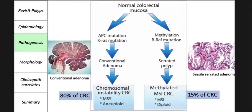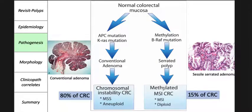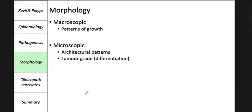Summarizing the two pathways: a normal colorectal mucosa with APC mutation leads to a conventional adenoma, while a BRAF mutation leads to a serrated polyp — both are adenomas but with different morphology. Conventional adenomas may show tubular, villous, or tubulovillous patterns, eventually leading to chromosomally unstable, microsatellite stable, aneuploid colorectal cancers. Serrated polyps lead to methylated, microsatellite instable, diploid cancers. The most common pathway is the APC/beta-catenin pathway, causing 80 percent of colorectal cancers.